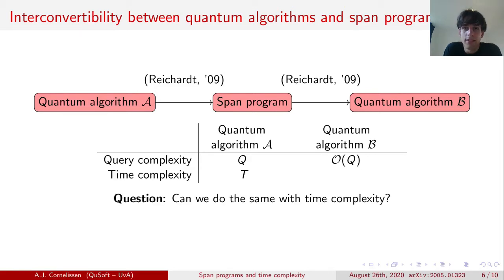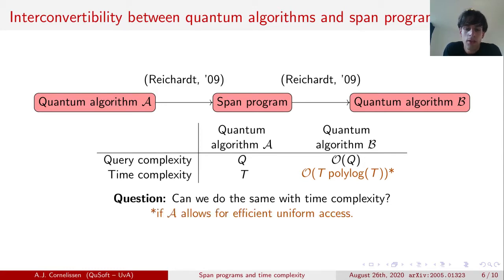The immediate question that arises is whether a similar result can be obtained with respect to the time complexity. This is the question that we set out to solve, and in this work we solve it in the affirmative for a particular class of quantum algorithms. Specifically, we show that if our quantum algorithm A allows for what we call efficient uniform access, then we can go through this construction whilst only incurring a polylogarithmic factor in the time complexity.